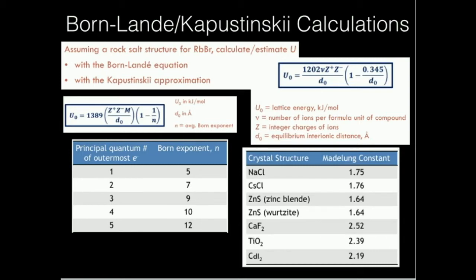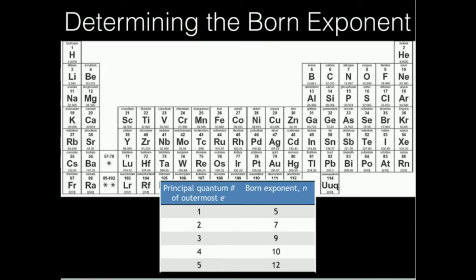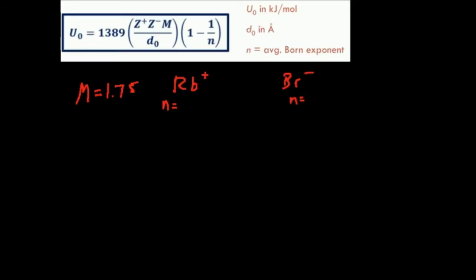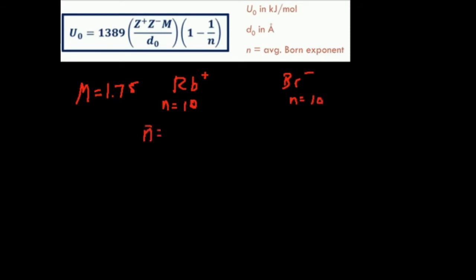Now we need to calculate the Born exponents. We're doing this for rubidium bromide. Rubidium has a +1 charge; bromide has a −1 charge. Rubidium is going to lose an electron and get to the configuration of krypton. For krypton, the outermost electron has a principal quantum number of 4, because it's in row 4, so the Born exponent for rubidium is 10. For bromide, it gains an electron and also has the electron configuration of krypton — principal quantum number 4 — so it also has a Born exponent of 10. Obviously the average of those is 10.